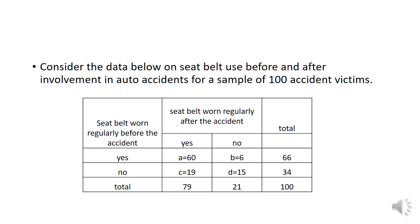For our column total, for yes that is 79, and for no we have 21. For our row total, for yes we have 66, and no we have 34, for a grand total of 100.